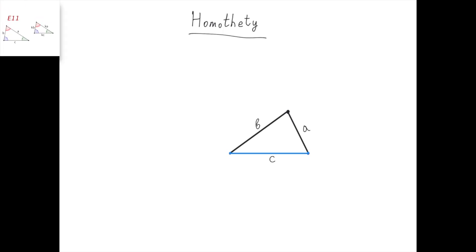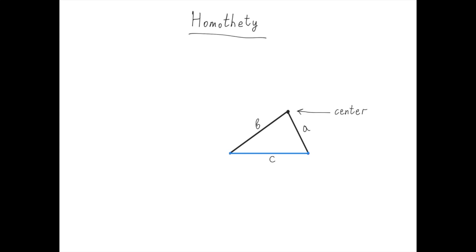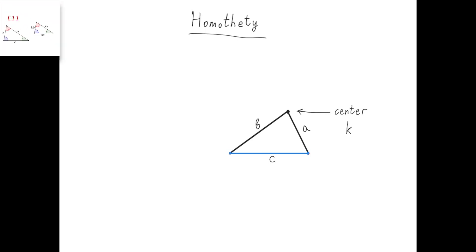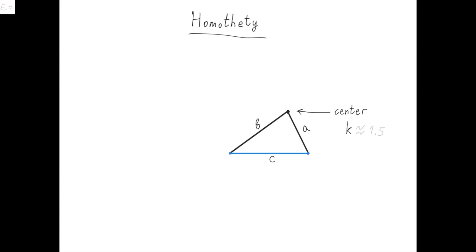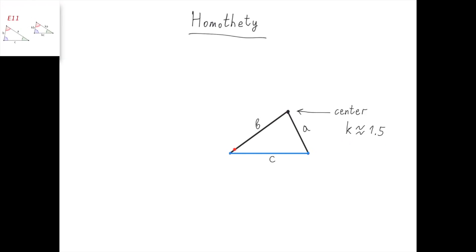Homothety is a transformation just like zooming in or zooming out on a map. First, we choose one special point called the center of homothety, which stays fixed after the zooming. In this case, we're choosing the center of homothety to be this point. Next, we need to choose a number k, which is going to be the coefficient of homothety — in other words, by how much does each segment on the picture scale after the homothety. This is the coefficient of scaling. I'm going to choose my k to be approximately 1.5, which means that after I do the homothety, each segment on the picture is going to become 1.5 times its original length.